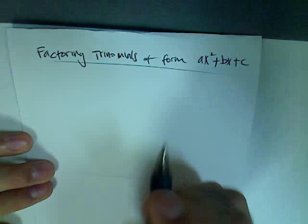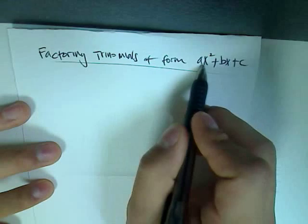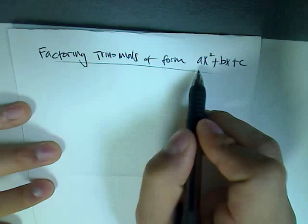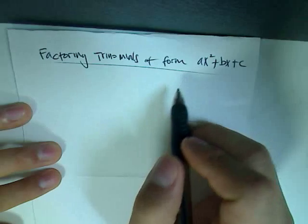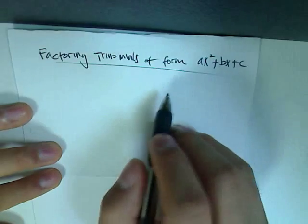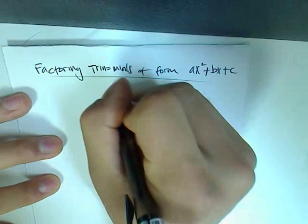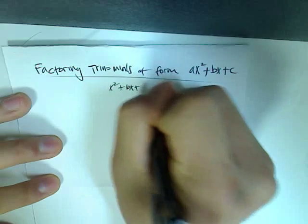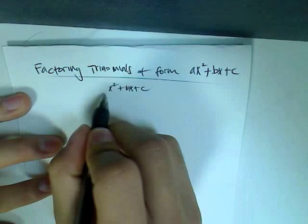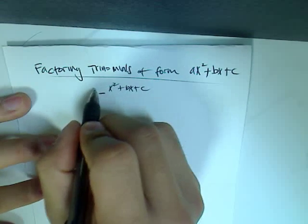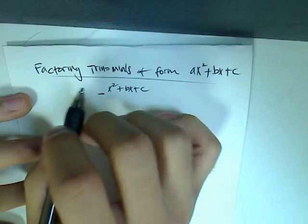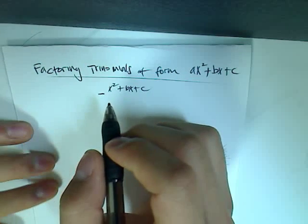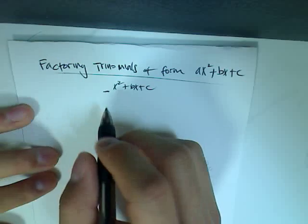Now we're going to factor trinomials of the form ax squared plus bx plus c, where a is not equal to 1. This is essentially the same as factoring an equation of that form, except you're introduced with a coefficient in front, which adds a little bit to the guessing and checking process of factoring trinomials.